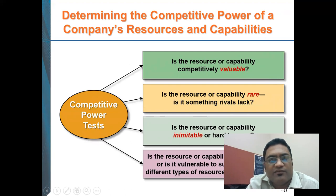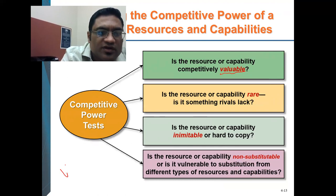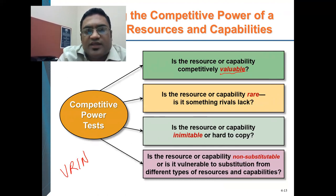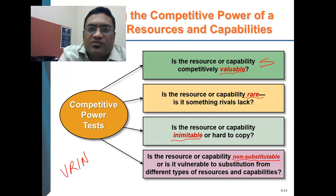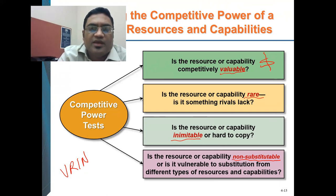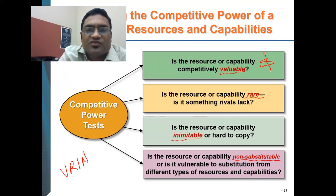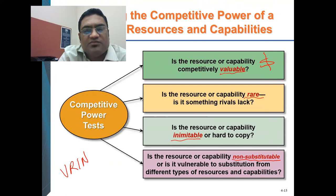When looking at a capability, you want to find out if it is a source of competitive advantage. The way you find out is through the VRIN test — Valuable, Rare, Inimitable, and Non-substitutable. Valuable means simply that you should be able to make money off of it. Rare means if everybody has that capability you don't have an advantage. Even if a resource is valuable and rare, if it's easy to copy you don't have a sustainable competitive advantage — at best a temporary one until competitors copy you.